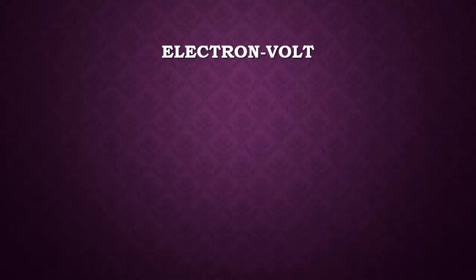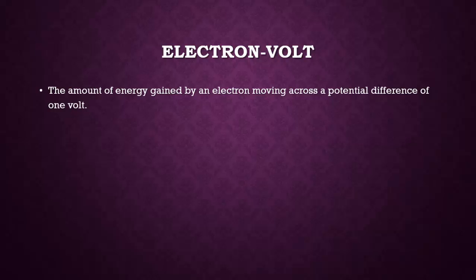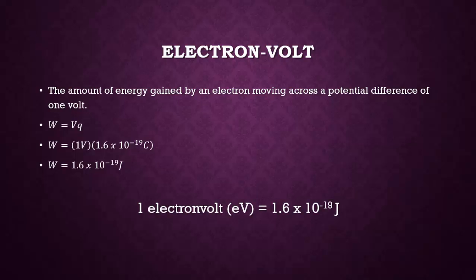That energy unit, eV, stands for electron volt. An electron volt is the amount of energy gained by an electron moving across a potential difference of 1 volt. Let's calculate it: work equals potential difference times charge, and if we plug in 1 volt and the charge of the electron, we get 1.6 times 10 to the negative 19 joules. This means that 1 electron volt is equal to 1.6 times 10 to the negative 19 joules. You should write this down, but keep in mind it's also found on the front page of your reference tables.